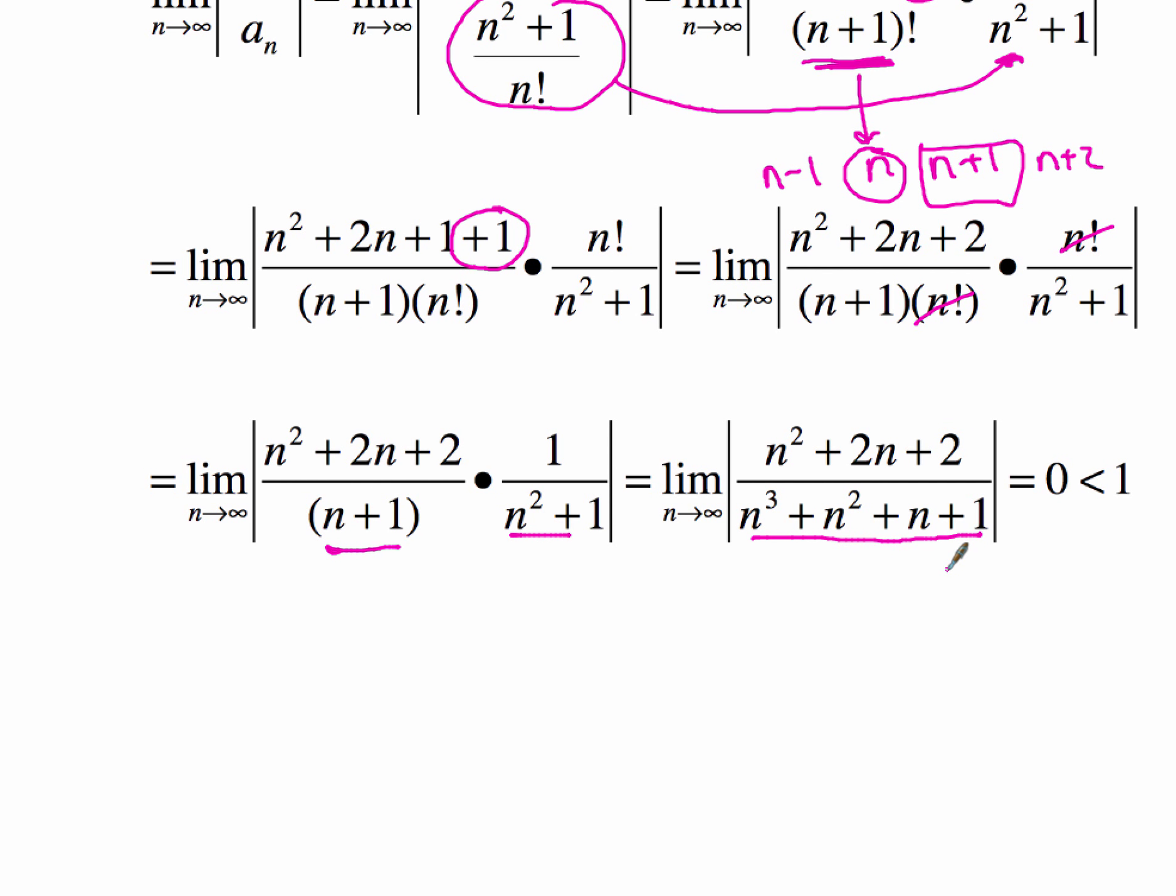Now if you remember your limit rules as n goes to infinity, you're only looking at the highest degrees of your exponent, of each one of these. So here we've got n cubed in the denominator, and only n squared in the numerator. Which means then that your limit is going to approach 0, which of course we know is definitely less than 1.